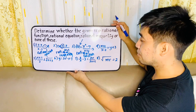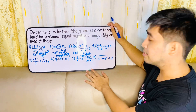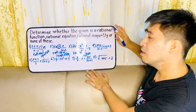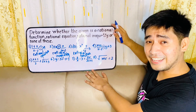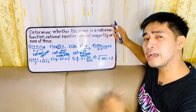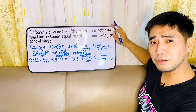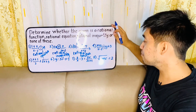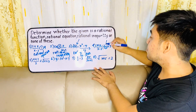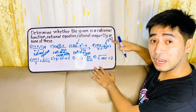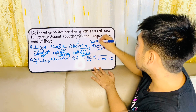For number four, we'll be having x plus 2 all over x minus 2 is equal to y plus 3. There is an equal sign — can we say that this is a rational equation? Let us analyze. Hahanap muna tayo ng iba pang variable. Bukod sa x, meron pa bang ibang letter? Meron pa bang y? Therefore, there is. And if there is a y, it is also equal to f(x). Therefore, f(x) is a function, and we could say that number four is a rational function.